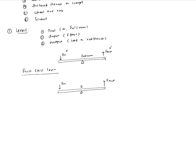For a first class lever, let's say point O is the point of rotation, d1 is the distance from O to the input force, and d2 is the distance from O to the output force. Assuming the forces act perpendicular to the platform, we take moments about point O equal to zero: F-in times d1 minus F-out times d2 equals zero, giving us F-output over F-input equals d1 over d2.